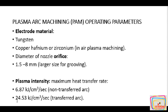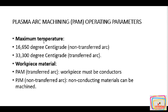The maximum temperature obtainable is 16,650°C in the non-transferred arc and 33,300°C in the transferred arc. Regarding workpiece material: in plasma transferred arc machining, the workpiece must be a conductor. For plasma jet machining (non-transferred arc), non-conducting material can also be machined. So we can machine non-conducting materials in plasma jet machining, but in plasma arc machining we can only machine conductors.